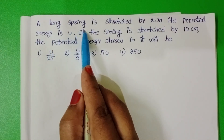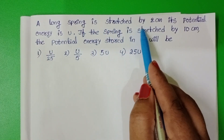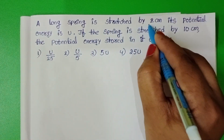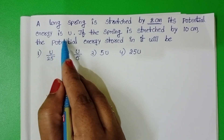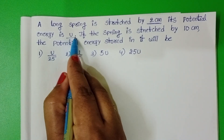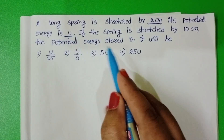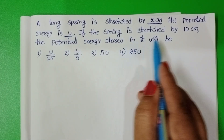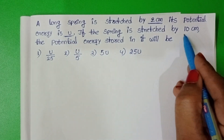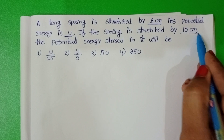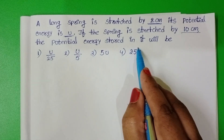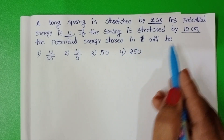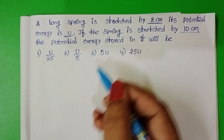A long spring is stretched by 2 cm. Its potential energy is U. If the spring is stretched by 10 cm, the potential energy stored in it will be?